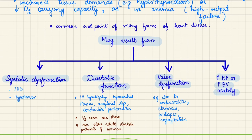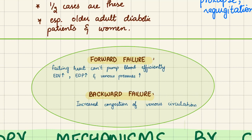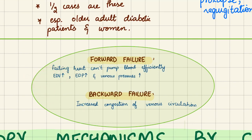Increased blood pressure or blood volume that occurs acutely also puts more workload on the heart, resulting in congestive heart failure. There are two types of failure: forward failure and backward failure, and they usually occur simultaneously. Forward failure means the heart cannot pump effectively forward — tissues have low perfusion, end-diastolic volume increases, and end-diastolic pressure increases. In backward failure, there is increased congestion of the venous circulation as blood backs up because the heart cannot pump it into the arterial system.